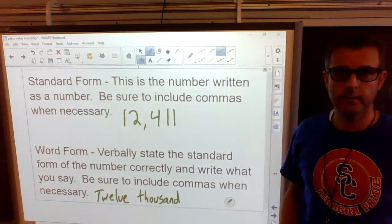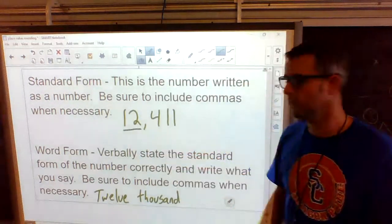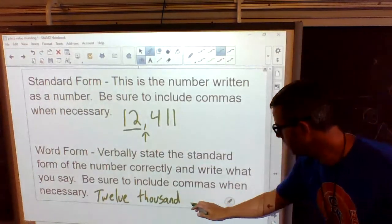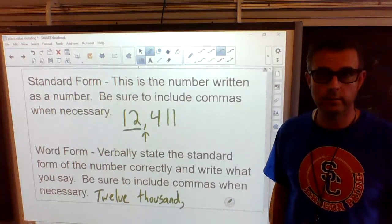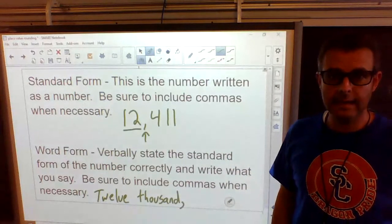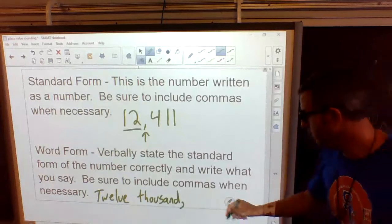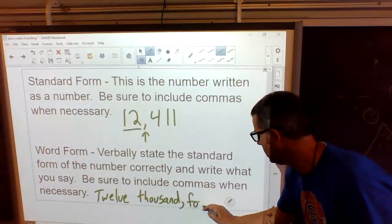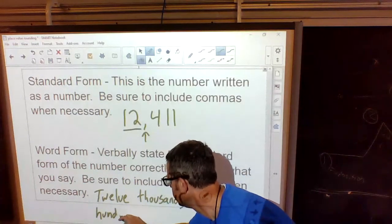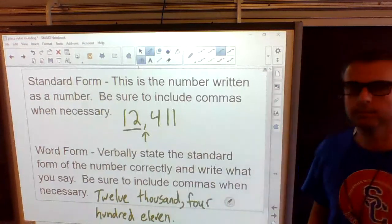We start out with twelve thousand. So I'm going to write twelve thousand. Now, check this out. This is the comma part that I put down here. Be sure to include commas. I just wrote twelve thousand, right? What is after that twelve? A comma. So yeah, we have to put a comma in there. Now we just have to write the rest of the number. So we said twelve thousand. What's the rest? Four hundred eleven. Yep, you guessed it. We have to write four hundred eleven.